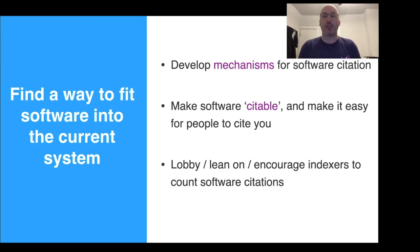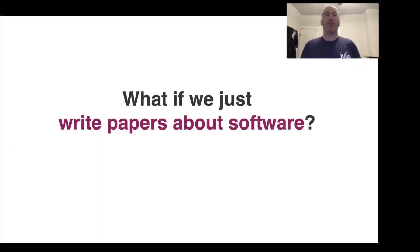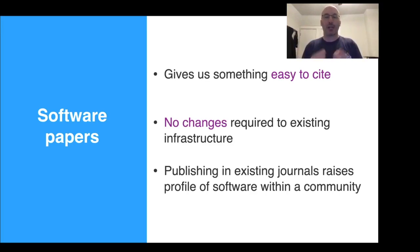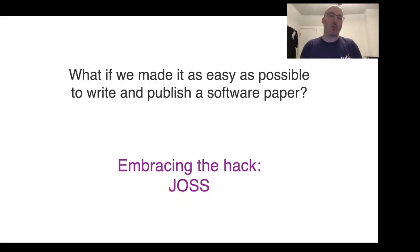We need to develop mechanisms for software citation, make software somehow citable, and make it easy for people to cite the software. The idea of the Journal of Open Source Software is to make this as painless as possible by just writing papers about the software. Software papers give us something that is easy to cite, it requires no changes to the existing publishing infrastructure, and publishing software papers actually raises the profile of software within a given community. So that is what JOSS is about: making it as easy as possible to write and publish a software paper.